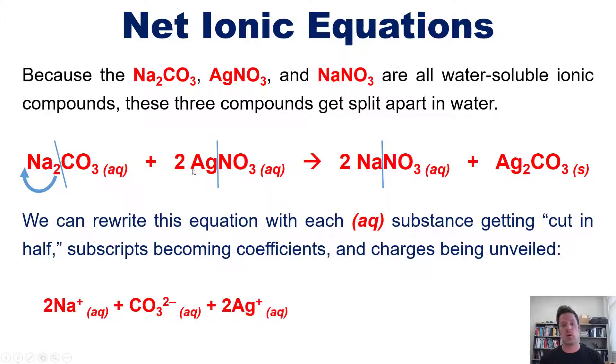Now, similarly, this 2 gets multiplied through. So, we also end up with 2 NO3 minuses. So, again, this means that we started with 2 molecules of AgNO3. When those 2 molecules of AgNO3 separate out, we end up with 2 Ag pluses and 2 NO3 minuses. Okay?